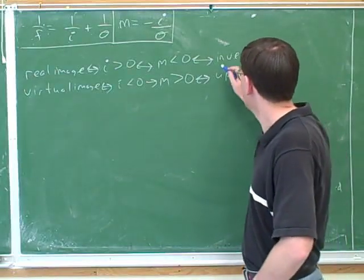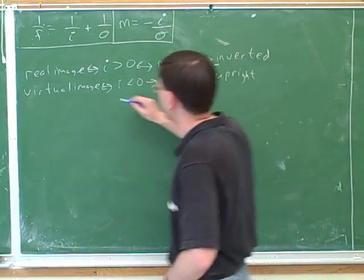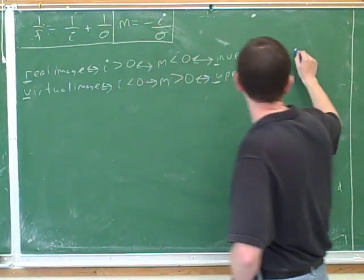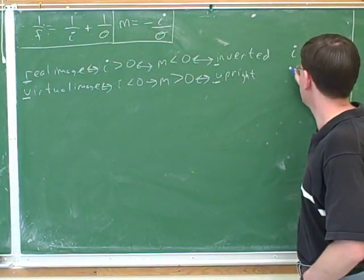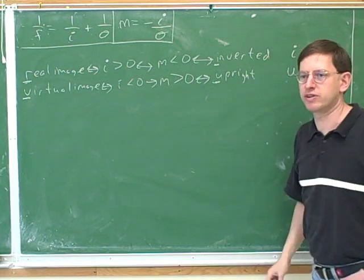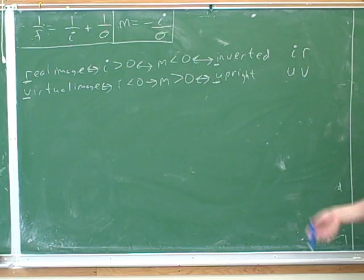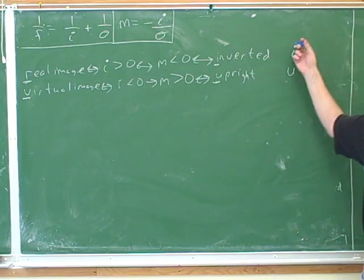So it would be nice if there was a memory aid for this. Looking at the initials, you can see that inverted images are always real, and upright images are always virtual. This kind of looks like infrared and ultraviolet. That's just a memory aid, right? Obviously it has nothing to do with infrared and ultraviolet.